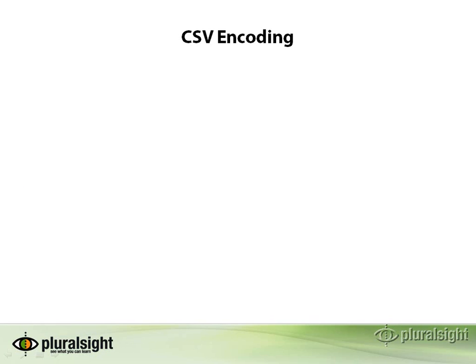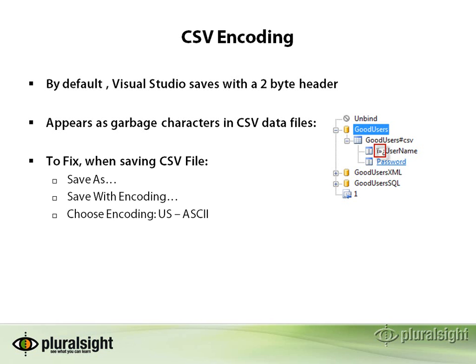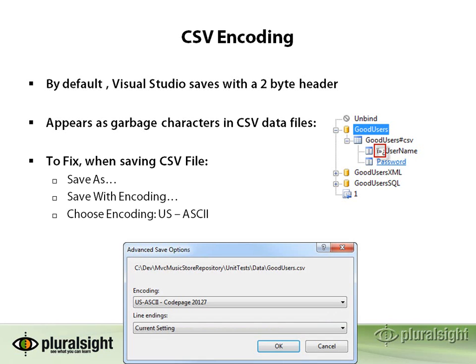When you do the CSV encoding for a data-bound test, by default Visual Studio saves these with a two-byte header. You might have seen this when I was showing you how to do web testing, so I thought I'd point out a little tip here. If you go to save with an advanced setting and do Save As, you can get rid of those garbage characters by choosing save with encoding and selecting US ASCII. Once you do that, your data-bound test will be able to use the CSV file without those two garbage characters at the front. They don't really cause any problems, but if you use the right encoding, you won't have to deal with those characters.